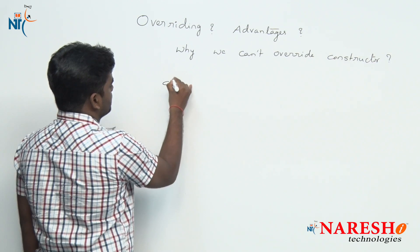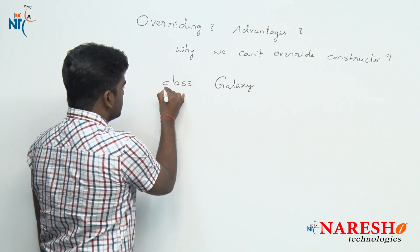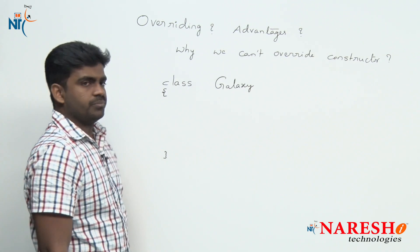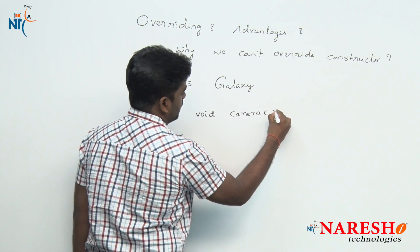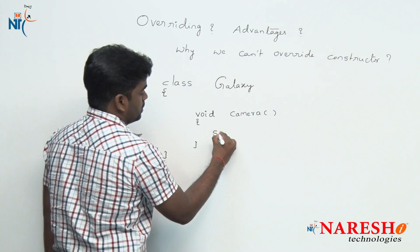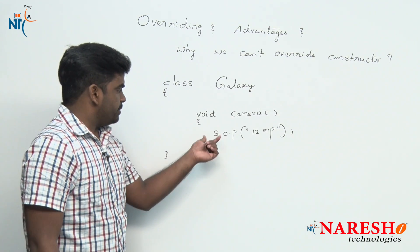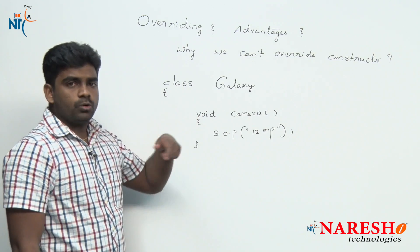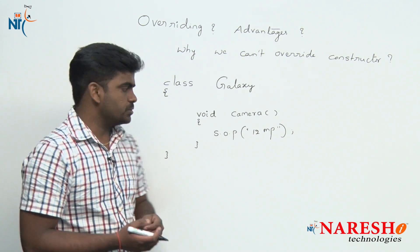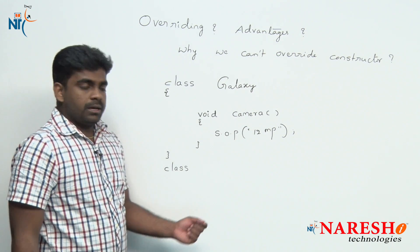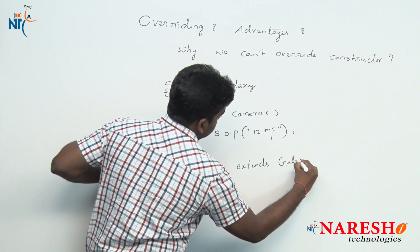For example, here we are taking one class — the class name is, just consider, GalaxyMobile. Inside GalaxyMobile, one method is there. Suppose any method — let's take the method is 'camera'. Camera is a method, and here it is a 12-megapixel camera — some information we are writing inside this. For method overriding, first of all someone should extend this class, there should be a parent-child relation. So we are taking one more class — the enhanced version of Galaxy, which is Samsung Edge, extending the features of GalaxyMobile.